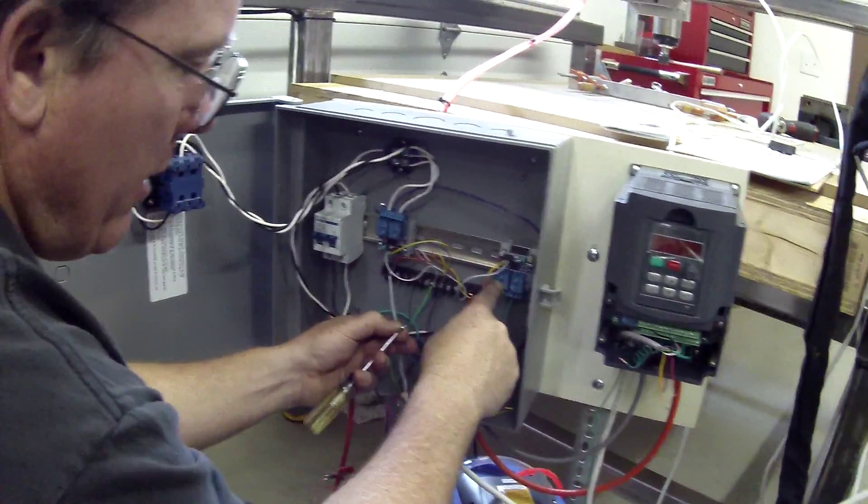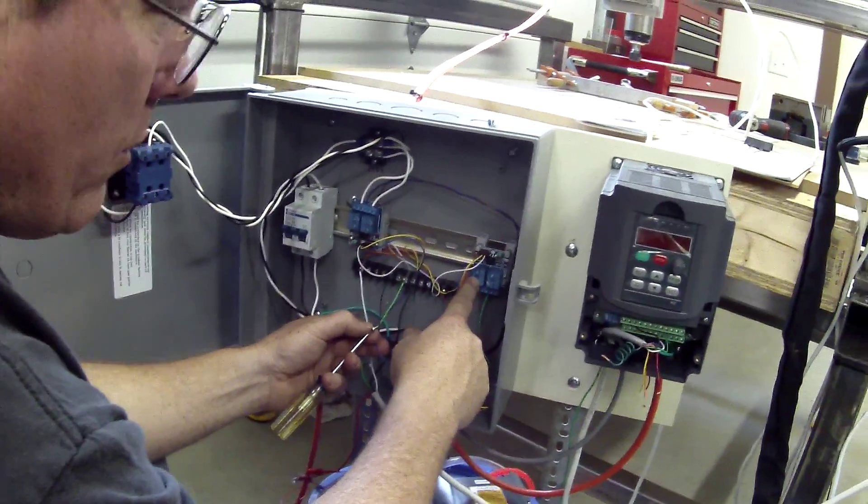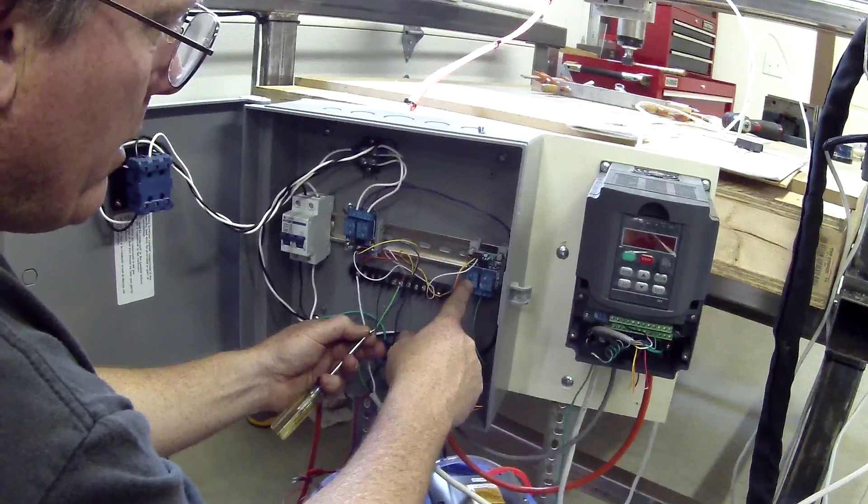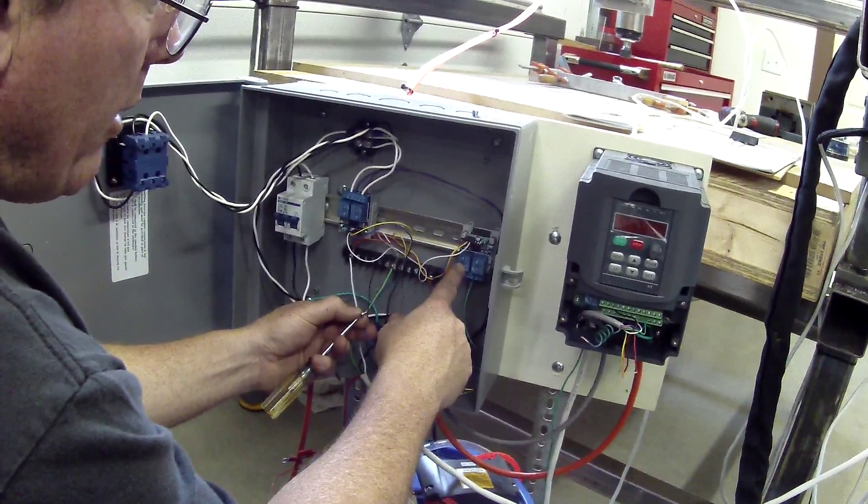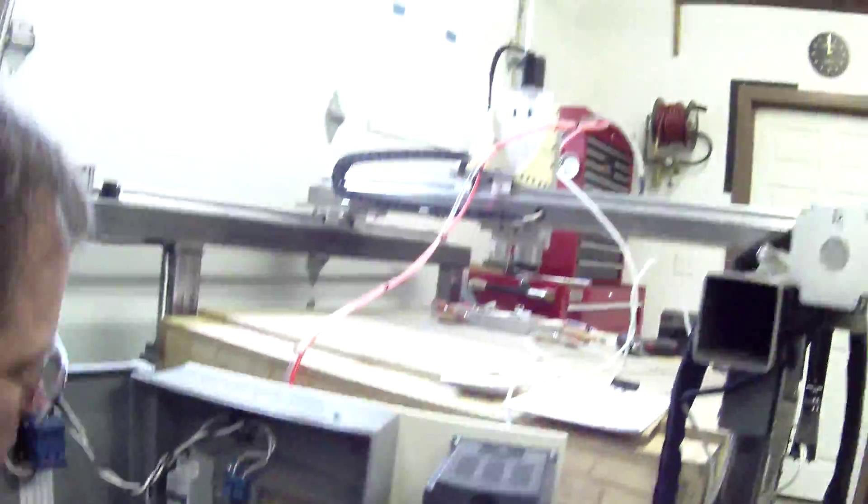And the relay on the left will eventually be used to trip a solenoid that will start air flow or coolant at the spindle. It'll start with just air.